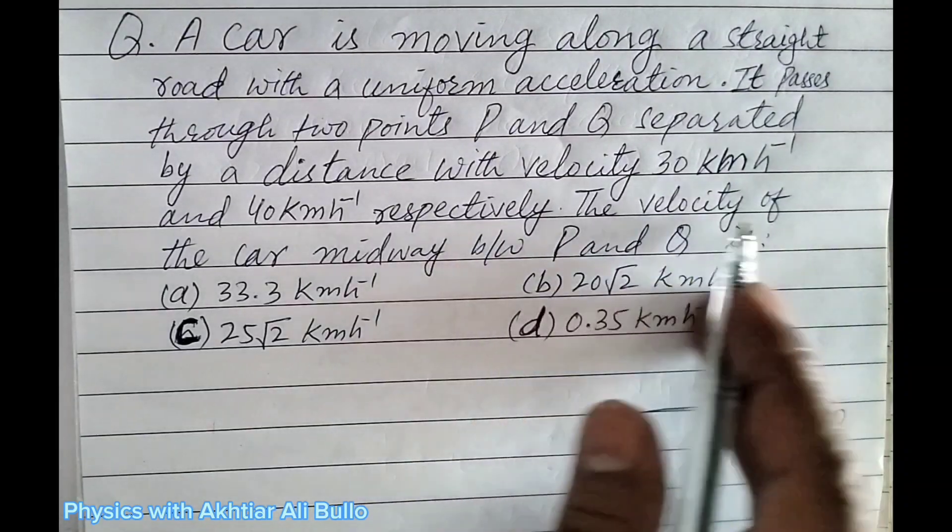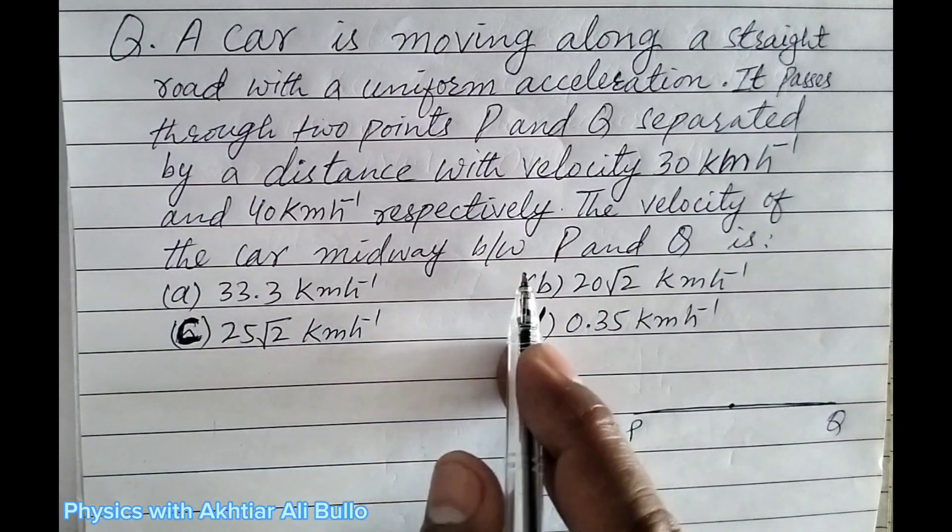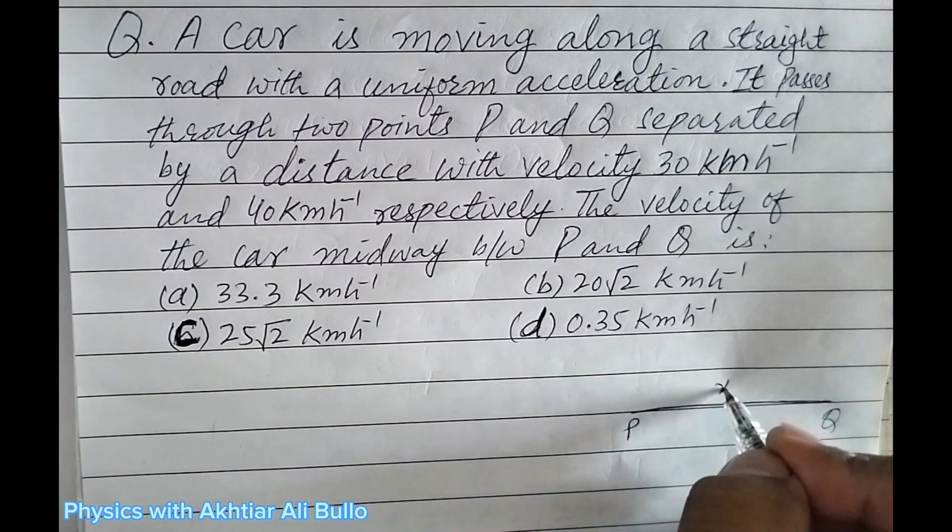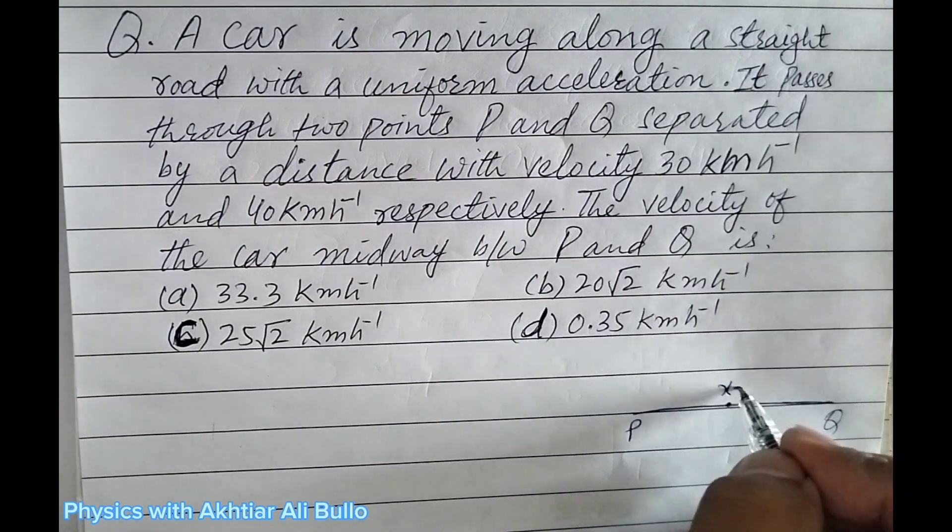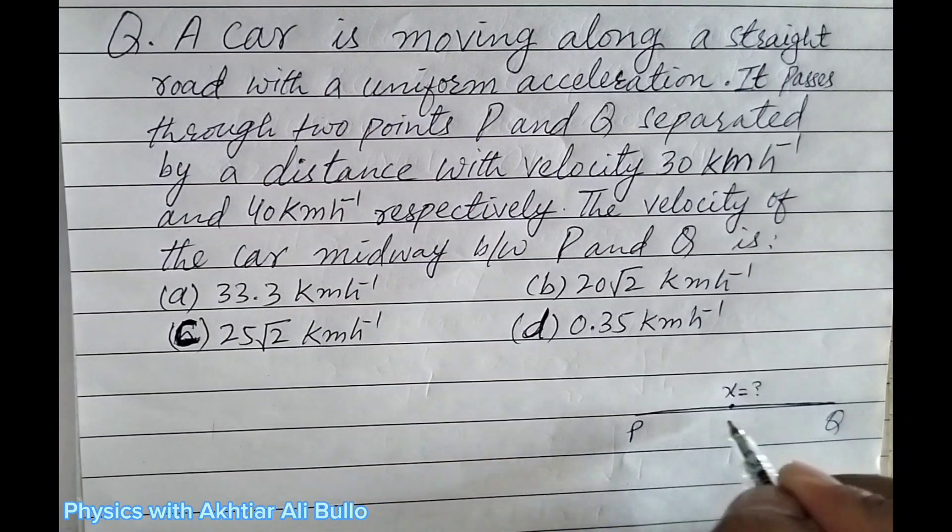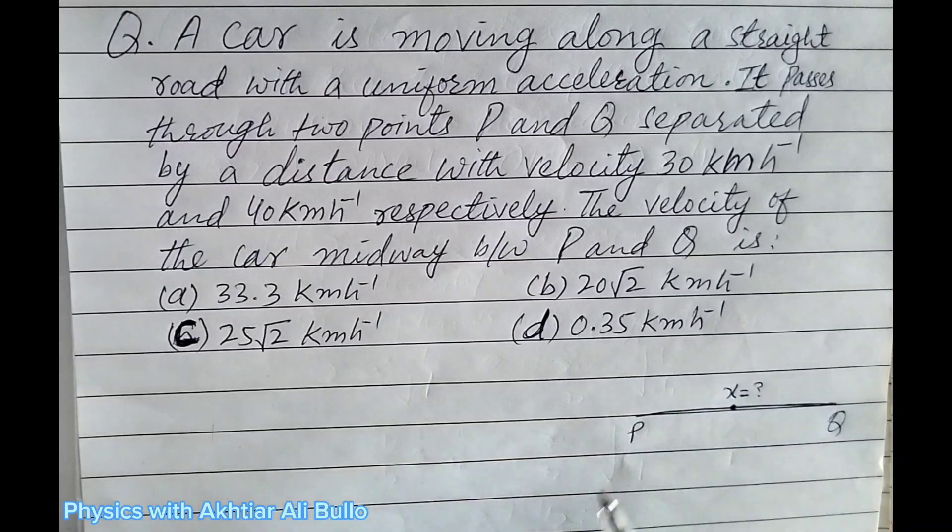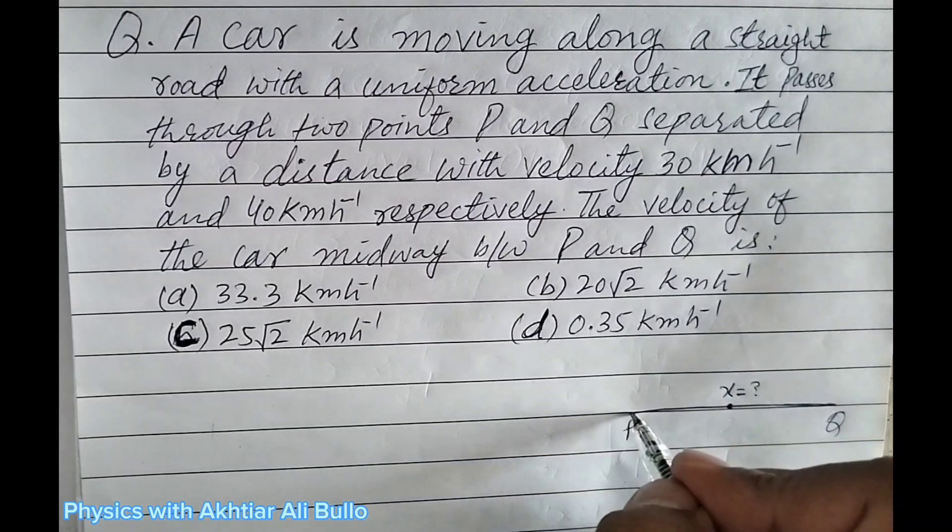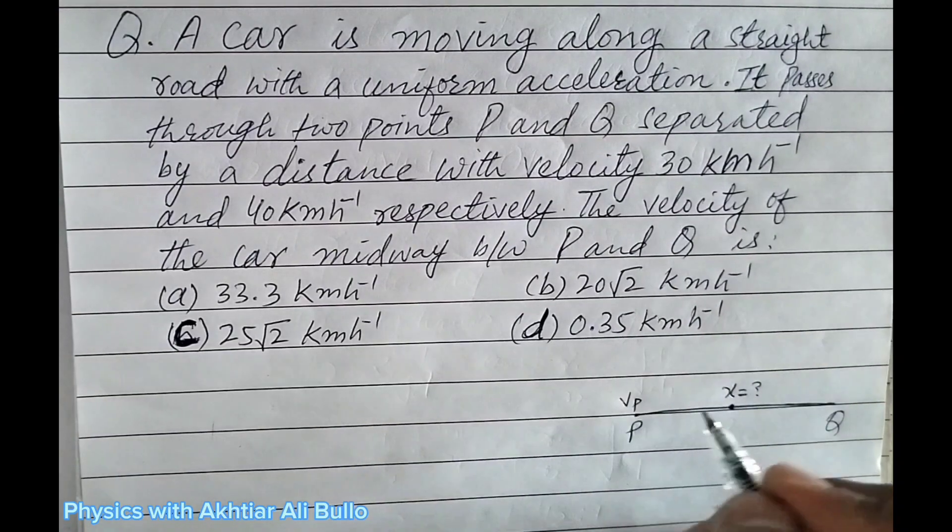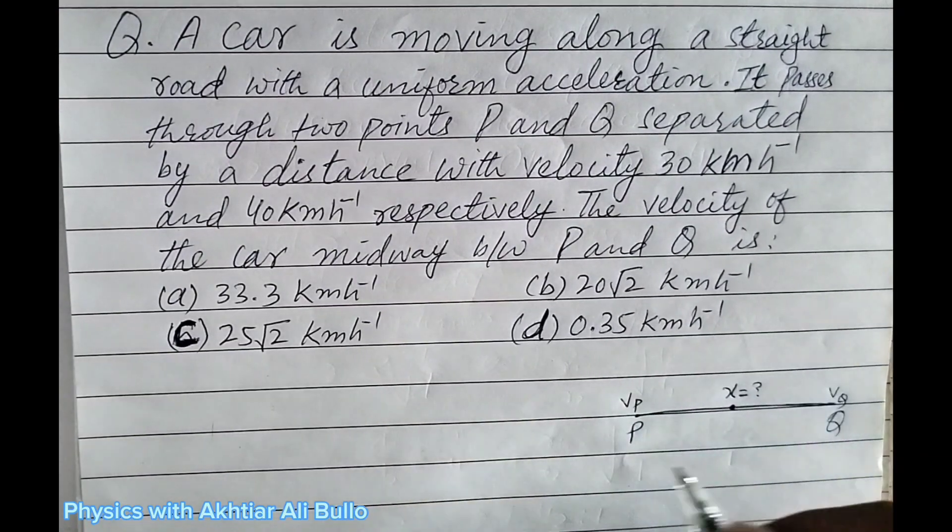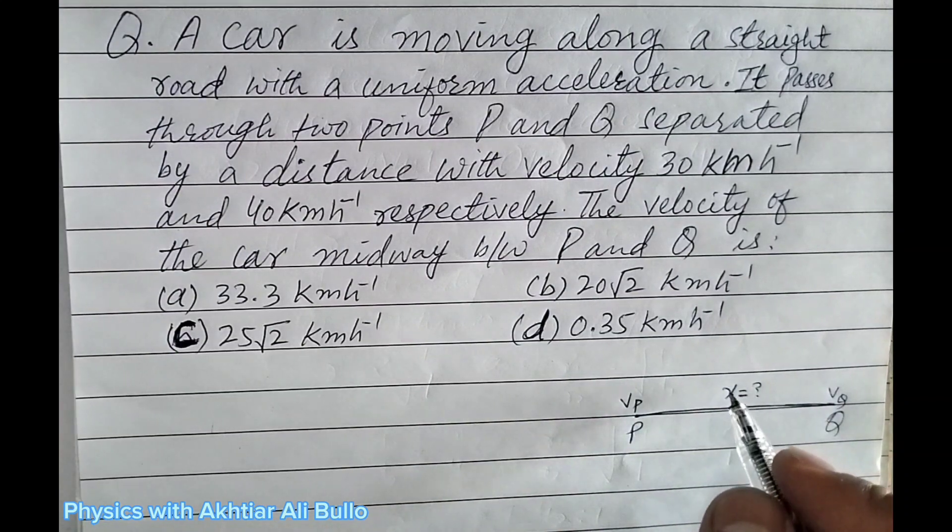We have to find the velocity of the car midway between P and Q. Means this is X, so we have to find this point, the velocity at X. The velocity at P is Vp and the velocity at Q is Vq, so we have to find Vx.